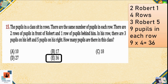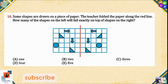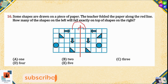Question 16: Some shapes are drawn on a piece of paper. The teacher folded the paper along the red line. How many of the shapes on the left will fall exactly on top of the shapes on the right? You can do a mapping here — the first square on the left will fall on the first square on the right, and the second on the second.